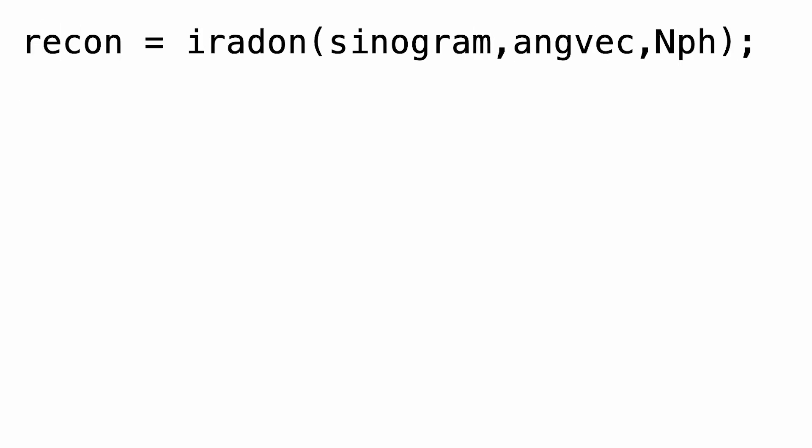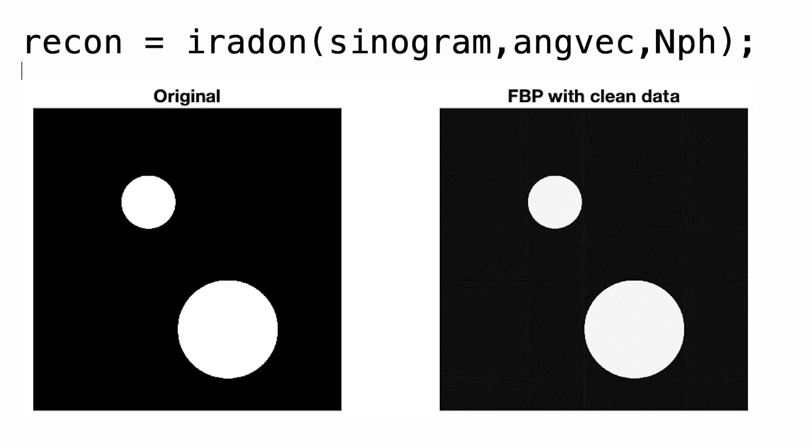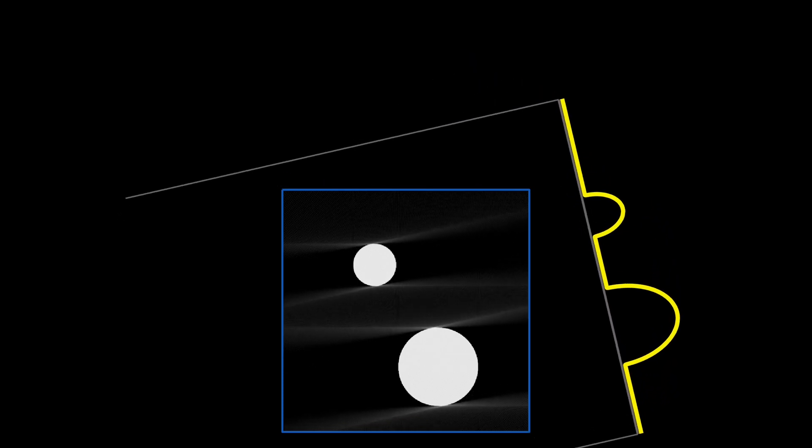Now it's time to reconstruct our digital phantom. Filtered back-projection can be done in MATLAB using the IRADON command, standing for inverse Radon transform. We give IRADON the sinogram and the measurement angles as arguments. Also we add the number of rows in our phantom so that the output of IRADON has the correct size. The resulting picture looks exactly like the original phantom, just as it should. Since I'm explaining this in video form, I want to show the reconstruction process in a more fancy way, building up with the rotation. Isn't it sweet?